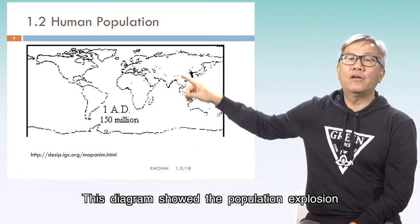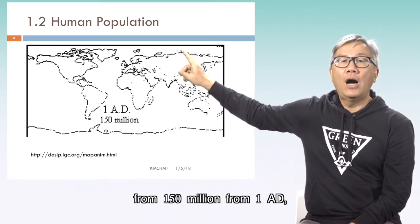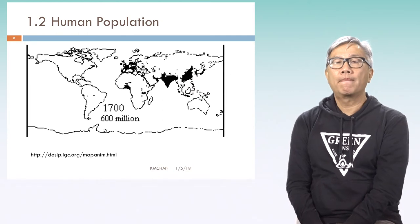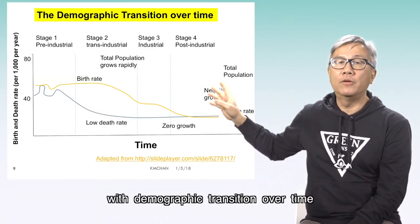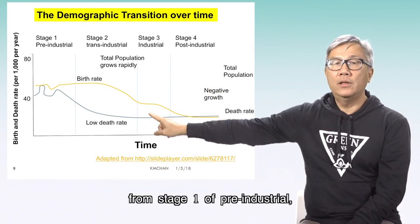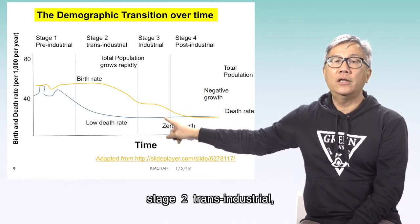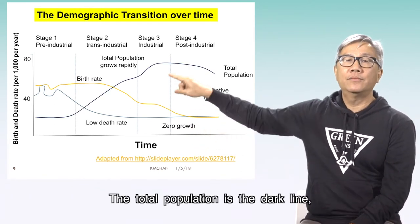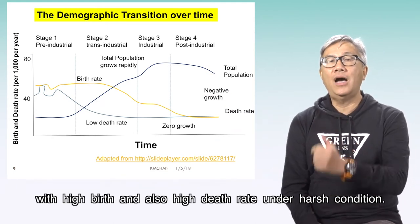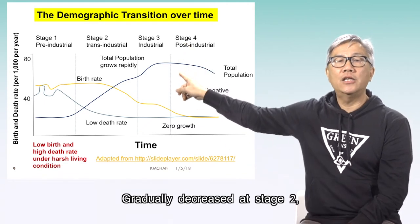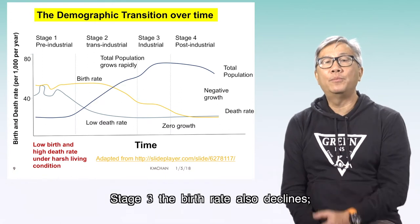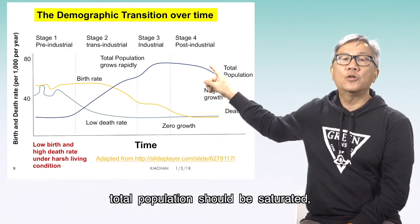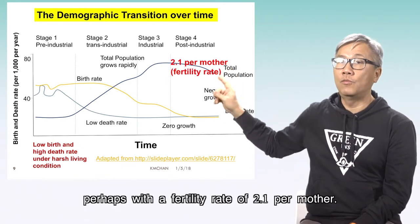How about human population? This diagram shows the population explosion from 150 million in 1 AD to 8 billion in 2020. The demographic transition moves from stage one, pre-industrial, through stage two, trans-industrial, stage three, industrial, and stage four, post-industrial. Total population is shown as a dark line, with high birth and death rates under harsh conditions, gradually decreasing at stage two as death rate declined. At stage three, birth rate also declines, and as both rates decline, total population should saturate, perhaps at a fertility rate of 2.1 per mother.